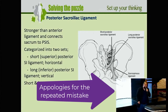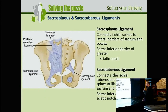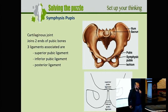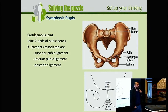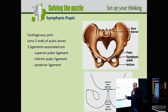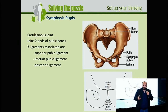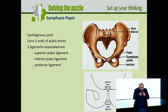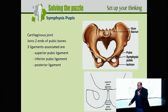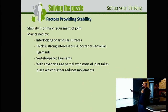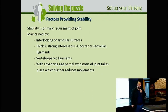The sacrospinous and sacrotuberous ligaments, along with the symphysis pubis, are connected with the sacroiliac joint in a closed kinematic chain. Any movement in the sacroiliac joint will be followed by movement at the symphysis pubis, which in turn limits movement in the sacroiliac joint. So this closed kinematic chain further restricts sacroiliac mobility.